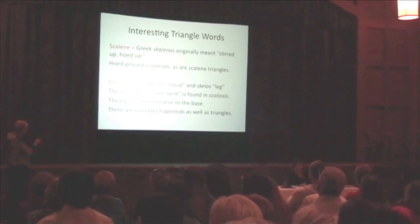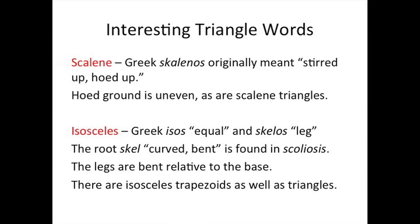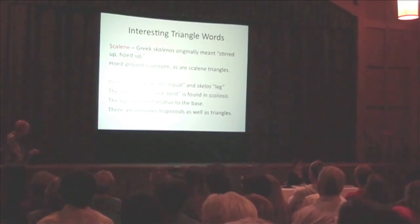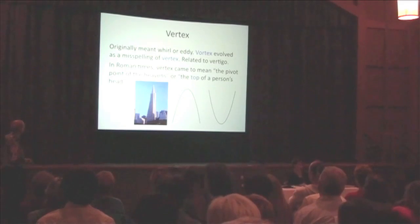Scalene comes from 'stirred up' or 'hoed up' — it's uneven. Isosceles: iso means equal, so equal legs. And the root also means bent — the legs are bent when it's sitting on its base.